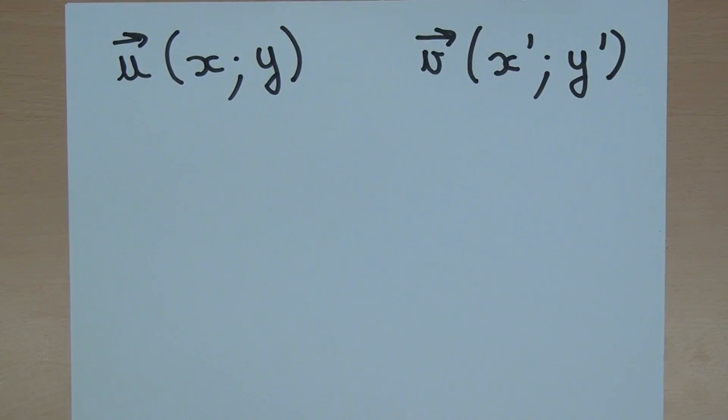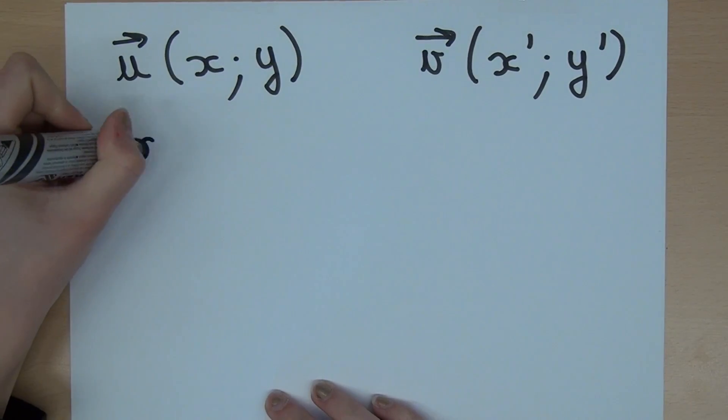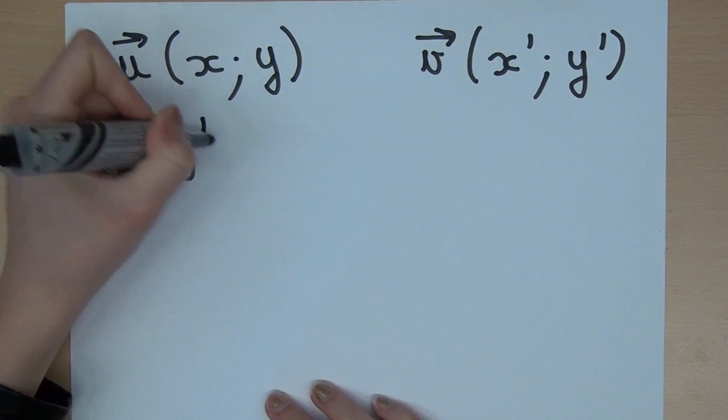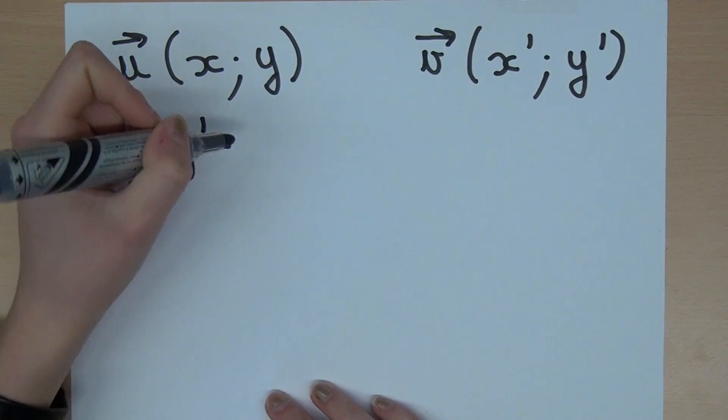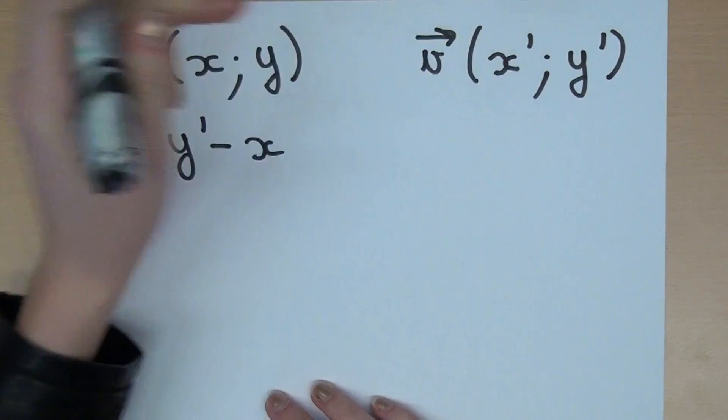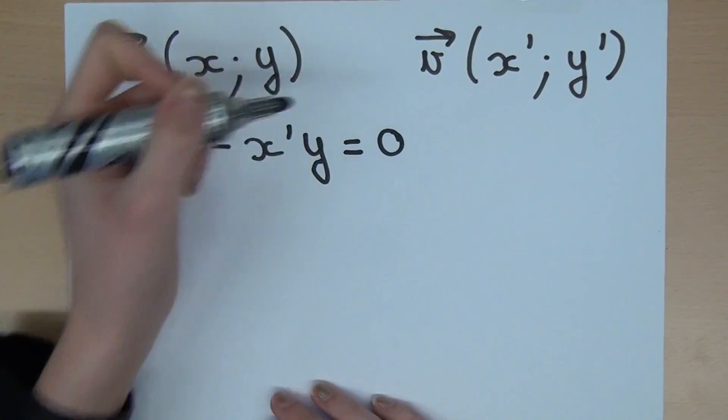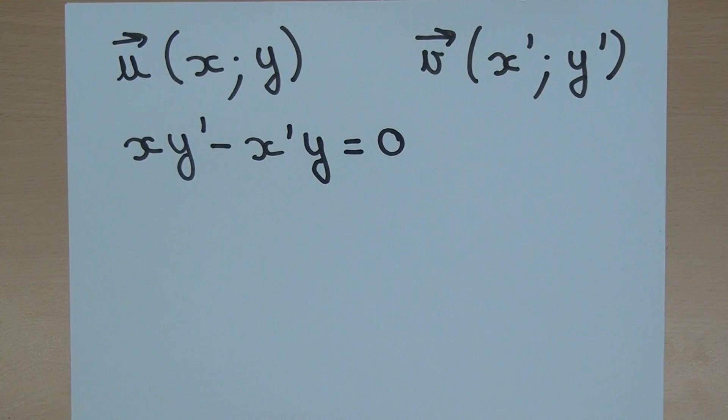The two vectors are collinear if and only if xy' - x'y equals 0. If the result is not equal to 0, the vectors are not collinear.